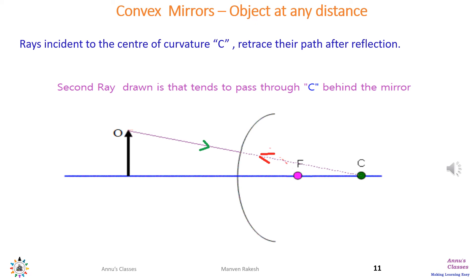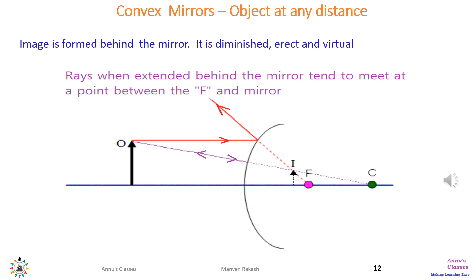When we combine both rays, they meet behind the mirror between the pole and F as shown in the figure. The image formed is diminished, erect and virtual. That completes all cases of ray diagrams for spherical mirrors.